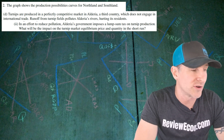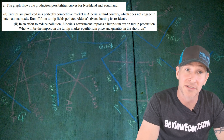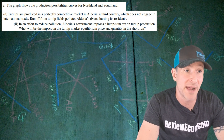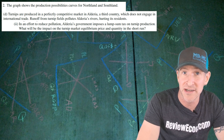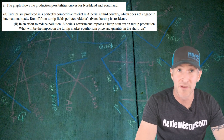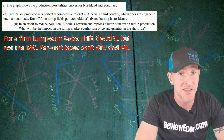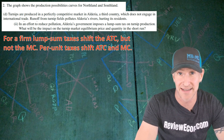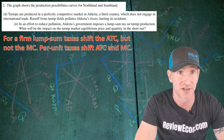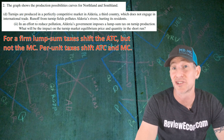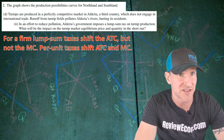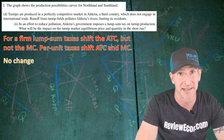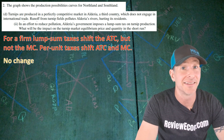For part D(ii), we are told that in an effort to reduce pollution, Alderia's government imposes a lump sum tax on turnip production. We are asked if that will impact the market equilibrium price and quantity in the short run. Lump sum taxes and subsidies shift only the average total cost curve, whereas per-unit taxes and subsidies shift both the marginal cost curve and the average total cost curve. It's the shift of the marginal cost curve that actually changes the quantity. Therefore, there will be no change in the price and quantity of turnips. Stating that gets you your last point.